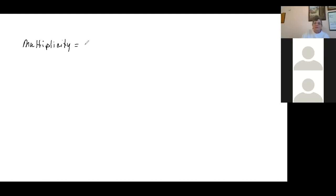The multiplicity is basically the exponent on that factor. It tells us how many of the zeros that zero counts as.